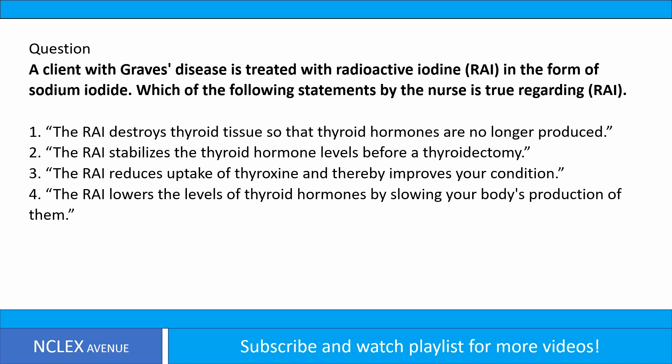Question. A client with Graves' disease is treated with radioactive iodine, RAI, in the form of sodium iodide. Which of the following statements by the nurse is true regarding RAI? 1. The RAI destroys thyroid tissue so that thyroid hormones are no longer produced. 2. The RAI stabilizes the thyroid hormone levels before a thyroidectomy. 3. The RAI reduces uptake of thyroxine and thereby improves your condition. 4. The RAI lowers the levels of thyroid hormones by slowing your body's production of them. Answer.